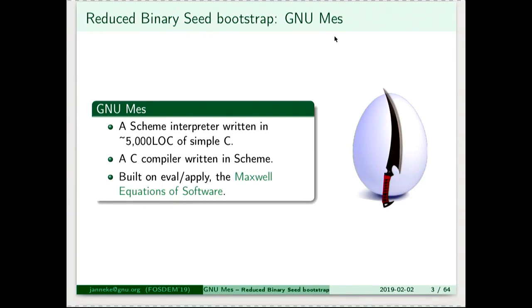So, the talk starts with GNU-Mess. GNU-Mess is a scheme interpreter, a tiny language written in a simple form of C, and a C compiler written in a pretty simple format of scheme. It's called MESS because our scheme is built on eval and apply, which are sometimes referred to as the Maxwell equations of software.